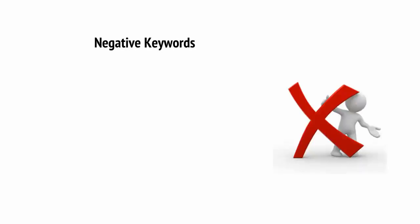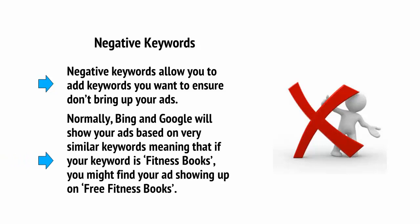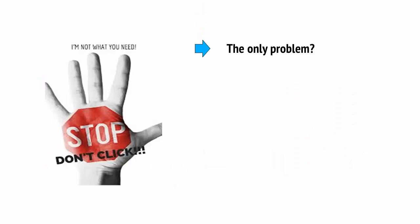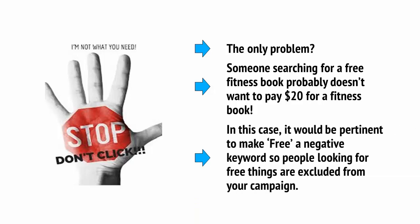There are numerous advanced features and options you can tweak to get the very most out of your ads, and these can make a big difference to your campaigns and your profits. For example, there's negative keywords. Negative keywords allow you to add keywords that you want to ensure don't bring up your ads. Normally Bing and Google will show your ads based on very similar keywords — if your keyword is 'fitness books', you might find your ads showing up on 'free fitness books'. Someone searching for a free fitness book probably doesn't want to pay $20 for one, so it would be pertinent to make 'free' a negative keyword so that people looking for free things are excluded from your campaign.